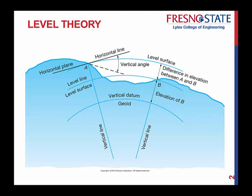Now, a level line falls within a level surface — it's just a line within a level surface, and it too is curved. A horizontal plane is that line you see here — it's a plane that is perpendicular to the local gravity vector. Most of the work in this class is done in a horizontal plane.